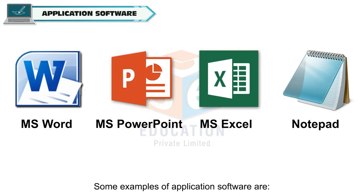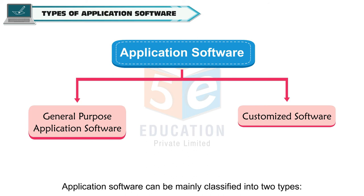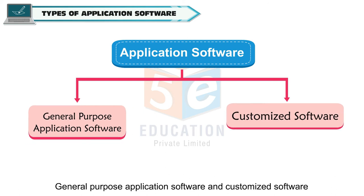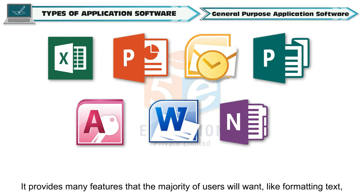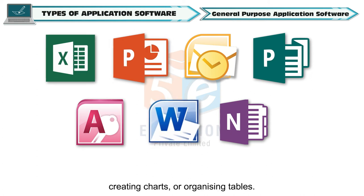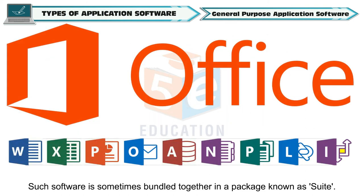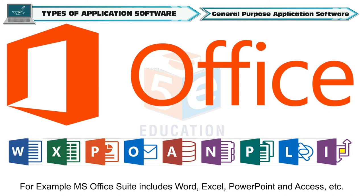Some examples of application software are MS Word, MS PowerPoint, MS Excel, Notepad, etc. Application software can be mainly classified into two types: general purpose application software and customized software. General purpose application software is the most popularly used application software. It provides many features that the majority of users will want, like formatting text, creating charts, or organizing tables. Such software is sometimes bundled together in a package known as a suite. For example, MS Office suite includes Word, Excel, PowerPoint, and Access, etc.